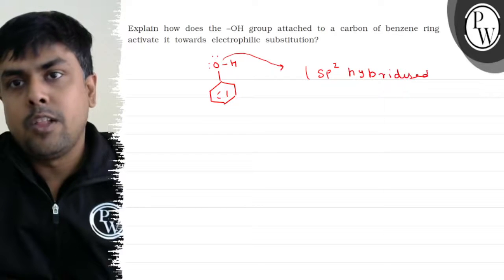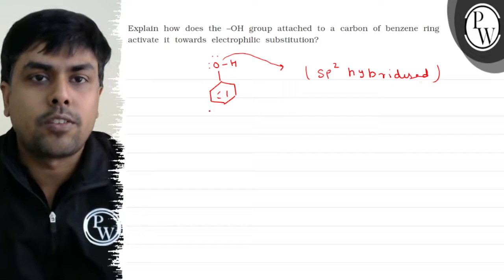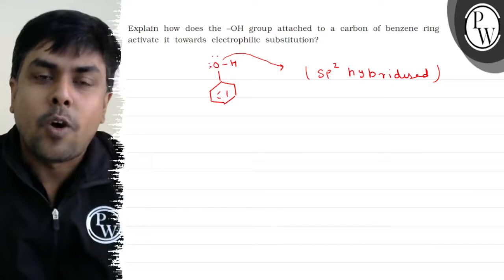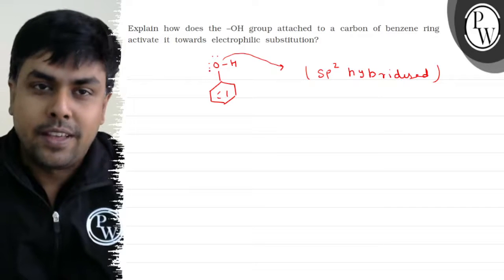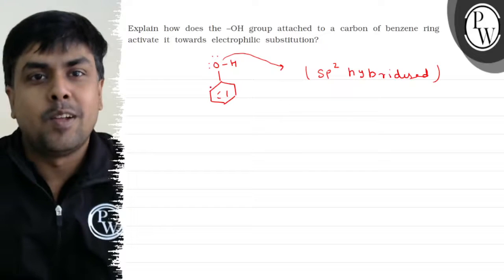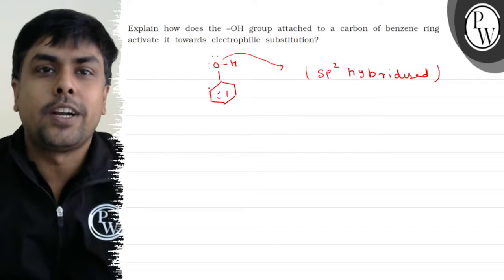So, will the lone pair present on this oxygen participate in resonance? 100%. And will the movement occur towards the ring? Yes. Why? Because the movement occurs from high potential to low potential, from lone pair to double bond.